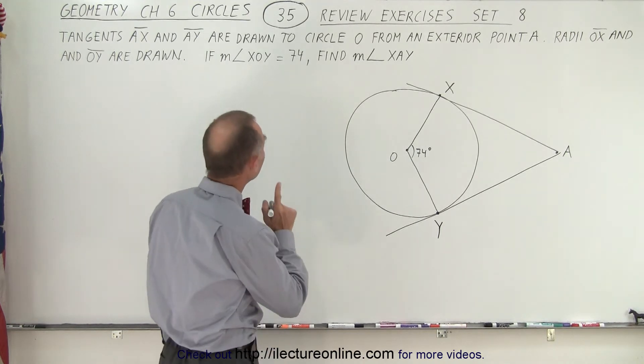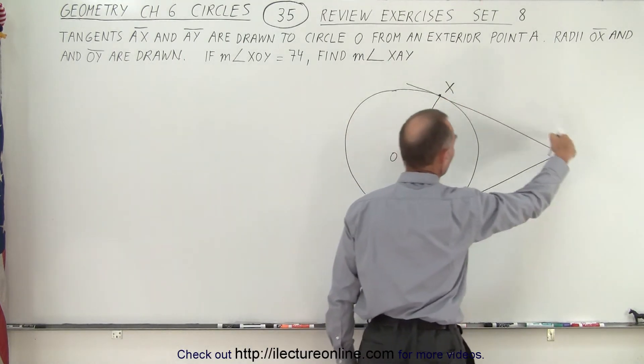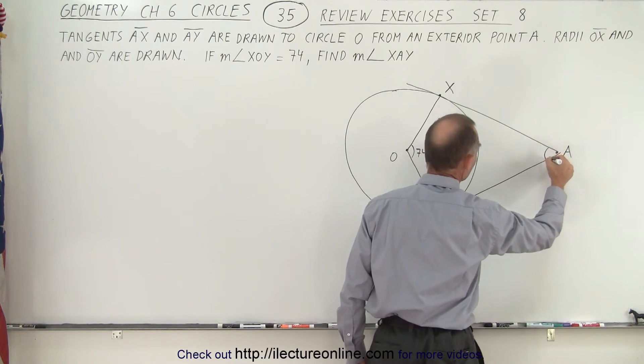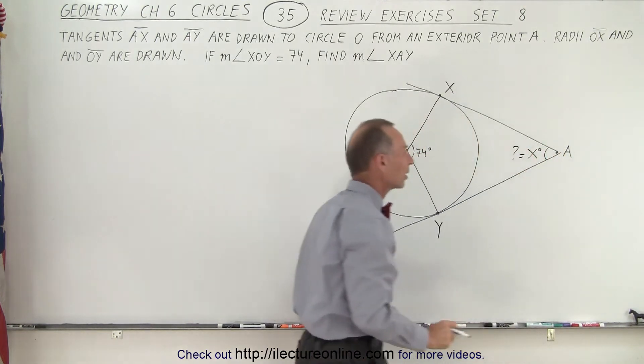Now they want to find the measure made by the lines XAY. So from X to A to Y that would be this measure right here. And let's say X degrees, and so we want to know what that is equal to.